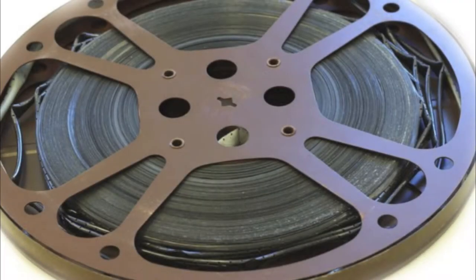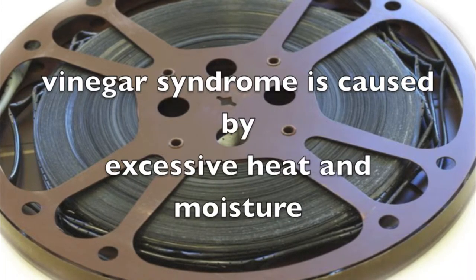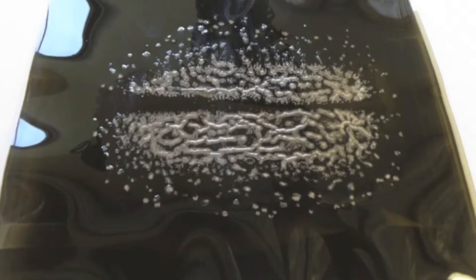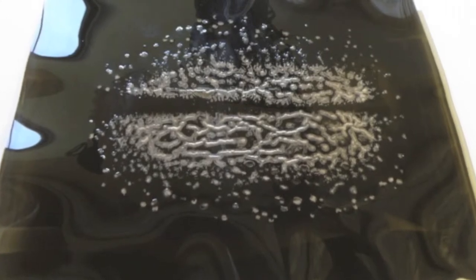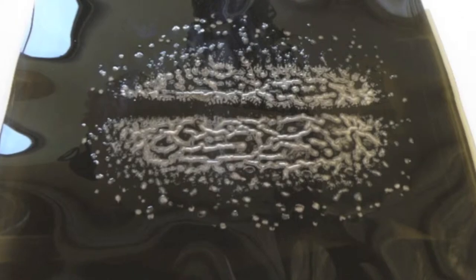Vinegar syndrome, as it is commonly known, is caused by excessive heat and moisture breaking down the cellulose molecules into acidic acid, which actually smells like vinegar. The base becomes brittle, tears easily, and shrinks, causing the emulsion to buckle or channel.